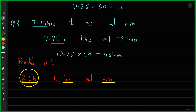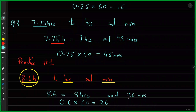So out of 8.6, I know I have 8 complete hours. For the remaining 0.6 hour, I need to convert it to minutes. One hour has 60 minutes, so 0.6 hours would have 0.6 multiplied by 60, which gives you 36. So the answer is 8 hours and 36 minutes. Umayza, your approach was correct — I think there was just a multiplication issue.